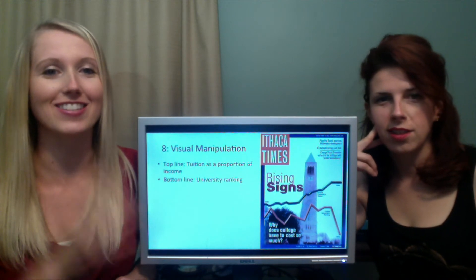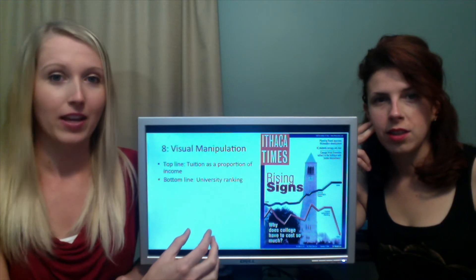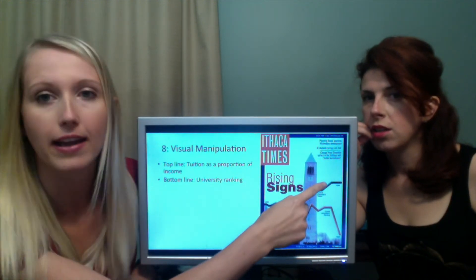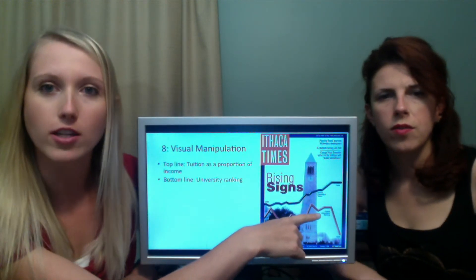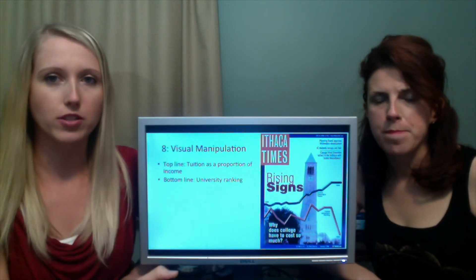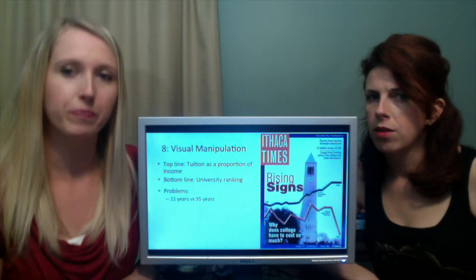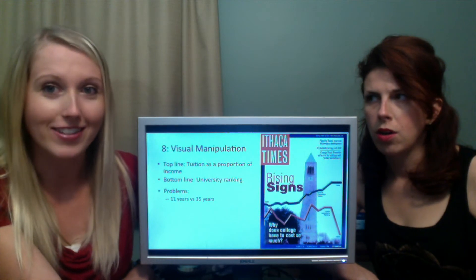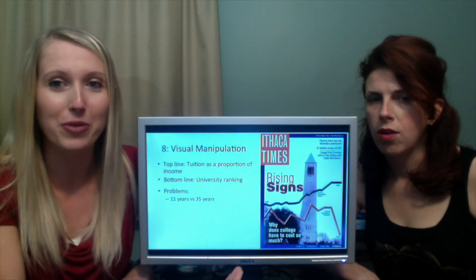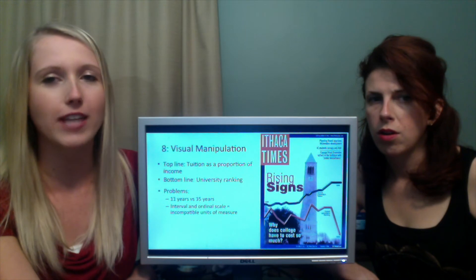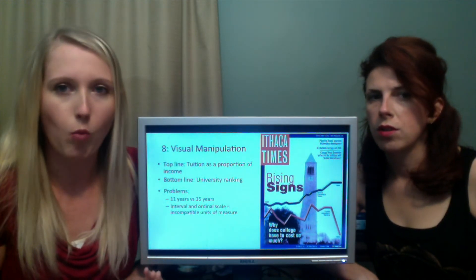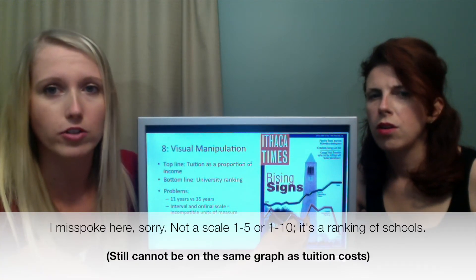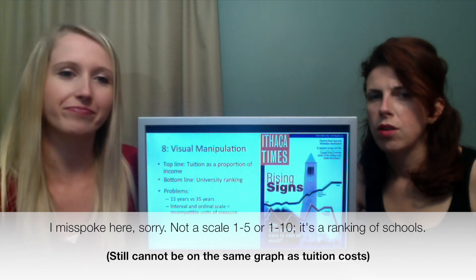And this is my all-time favorite. This is just so bad. This is the front page of a magazine. The top line, they're talking about college. The top line is Cornell University's tuition as a proportion of someone's income. The bottom line is Cornell University's rankings. If you look at it, tuition's going up, the school sucks. This is terrible. Let's not go there. Problem number one: the top line is over a 35-year period. The bottom line is over an 11-year period. How can you put that on the same graph? They're totally different numbers. They don't correlate. They don't match up. You can't put that on the same page.